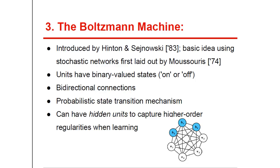Now let's talk about the Boltzmann machine. The Boltzmann machine is a type of connectionist model. It was introduced by Hinton and Sejnowski in 1983. But the idea of using stochastic networks was first laid out by Moussouris in 1974. Boltzmann machines have the following characteristics: their units have binary state values, either on or off. The connections are bidirectional — there are no arrows drawn on connections, suggesting the bidirectionality of the model. They also use a probabilistic state transition mechanism, and they can have hidden units to capture higher-order regularities when learning.